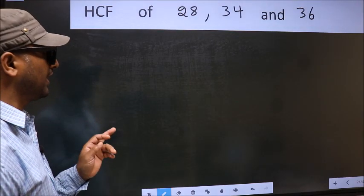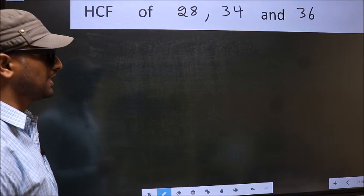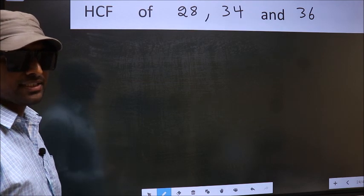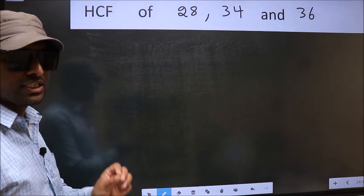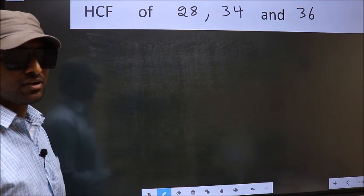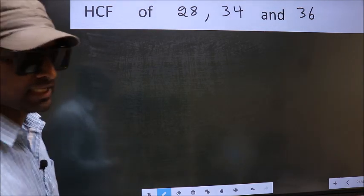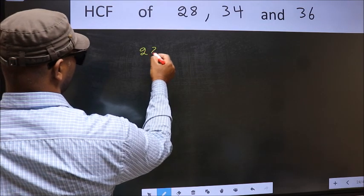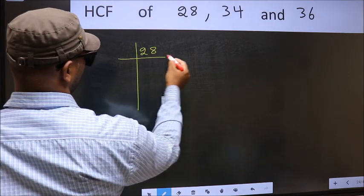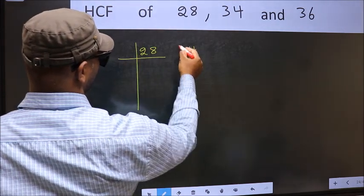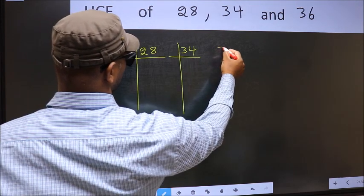HCF of 28, 34 and 36. To find the HCF, we should do the prime factorization of each number separately. What I mean is 28, 34, 36.